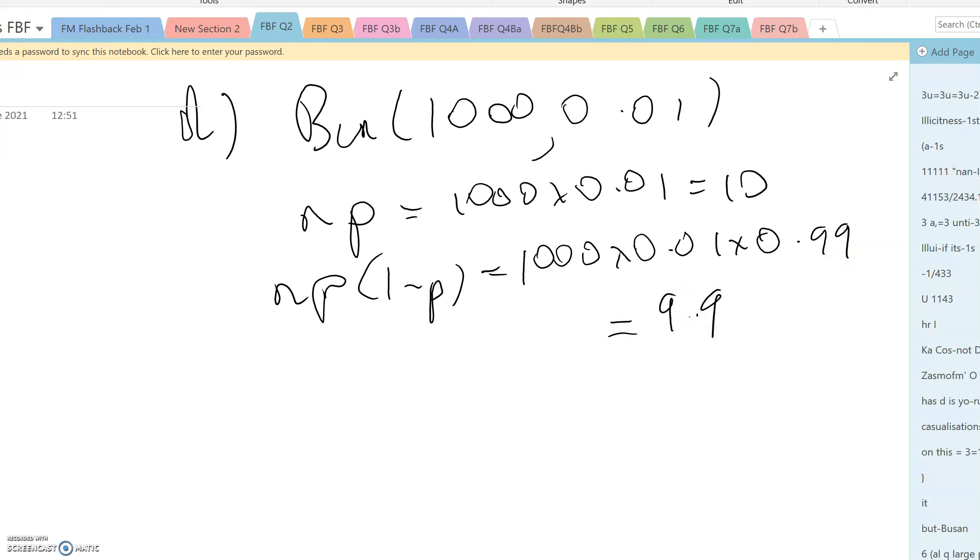Part e. This is going to approximate by a Poisson mean 10. X is more than 6 is 1 minus the probability of less than or equal to 6. And if we look that up on our calculators, it's 1 minus 0.1301, and that's equal to 0.8699.